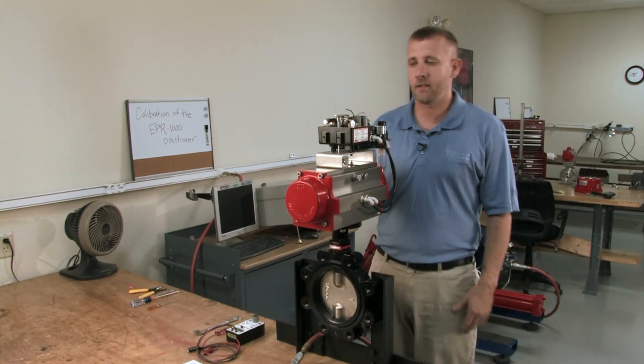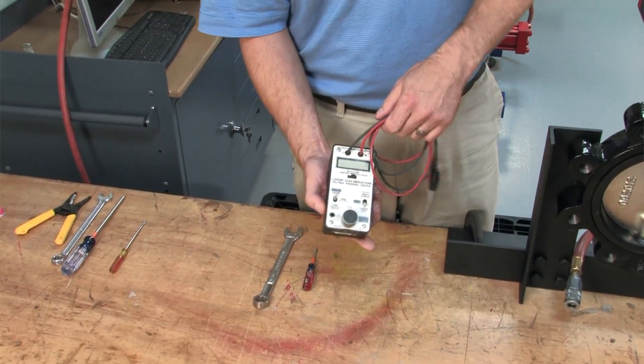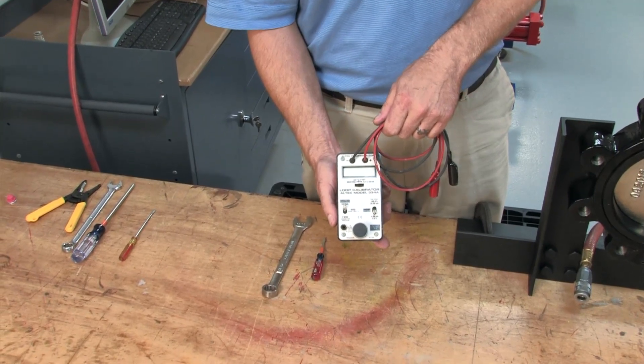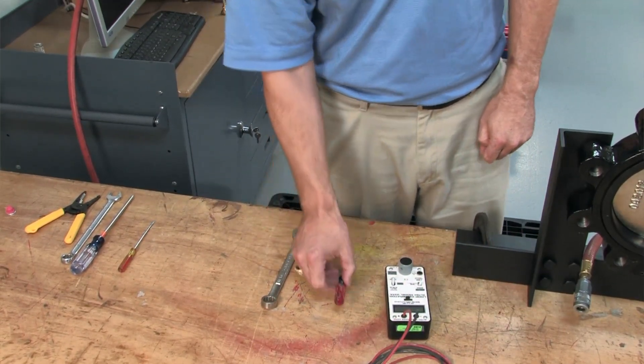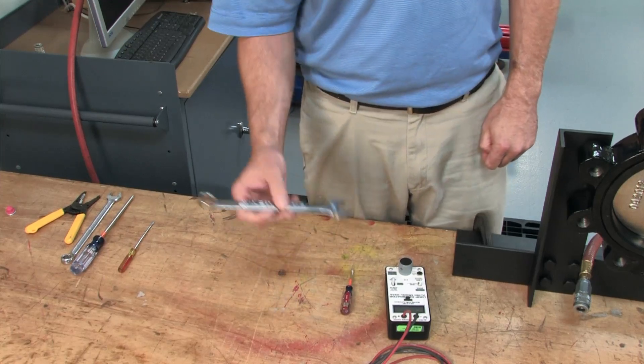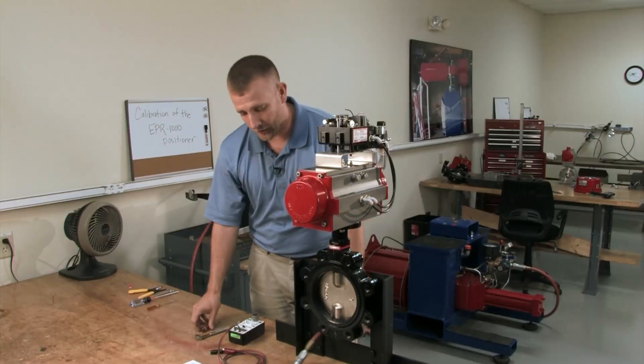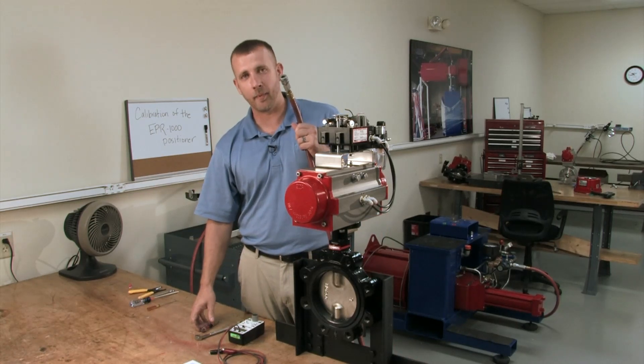A few tools you will need for today's calibration: we have a 4-20 handheld calibrator, flathead screwdriver, and the 11-16th wrench to adjust our travel stops. Also, clean shop air.